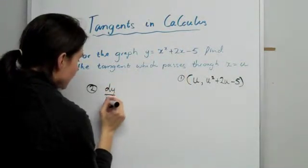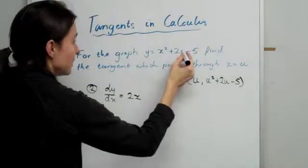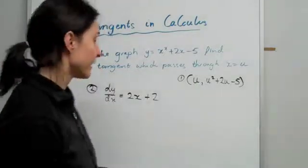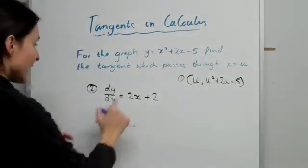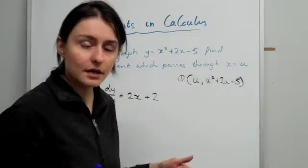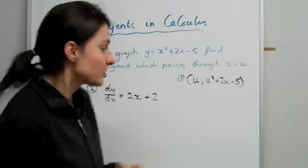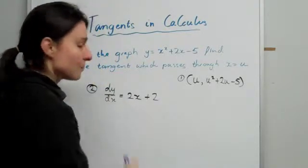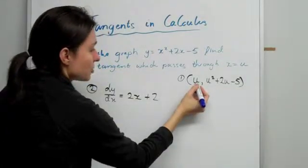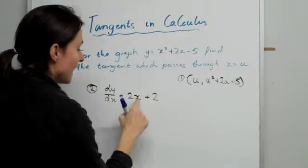So, we're going to go dy/dx is equal to, bring the power down, so 2x + 2, and the constant goes away. So this is our expression for our gradient. So once we have that, we know by what I just told you, is that the gradient of the curve, which is this, is exactly the same as the gradient of your tangent. So all we need to do, we know where this particular tangent passes through. We know it passes through this particular point. So all we need to do is just substitute our x value into this x so that we can find the gradient at the value of u.